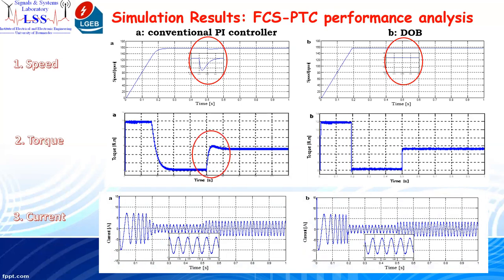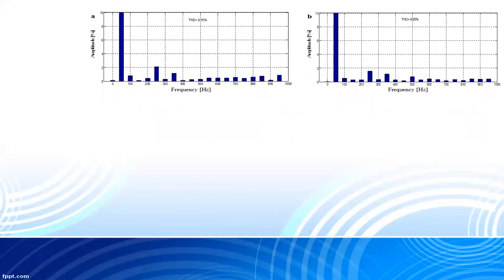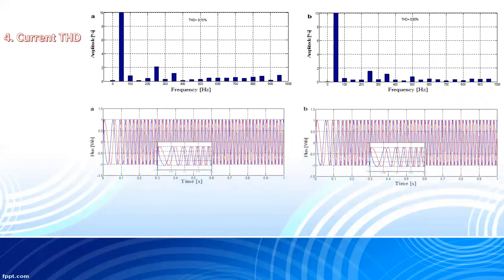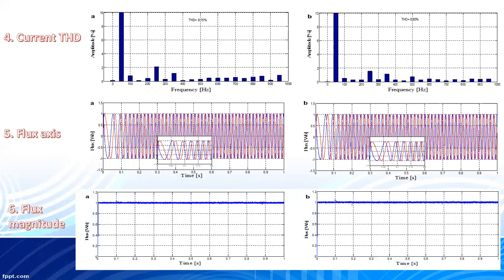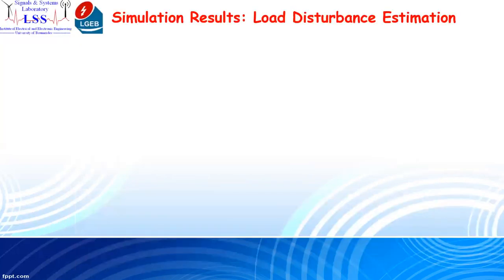The torque response to the load disturbance is also improved with the disturbance observer. Regarding total harmonic distortion, the THD in the DOB case has been reduced to 8.85% compared to 9.15% when using the conventional PI controller. The figures also show the flux trajectory and flux magnitude, which is smooth in both cases since model predictive control is used for the inner loops to control the induction motor.